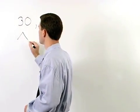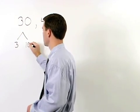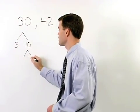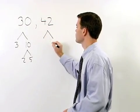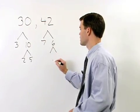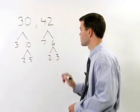30 is just 3 times 10, and 10 is 2 times 5. 42 is 7 times 6, and 6 is 2 times 3.